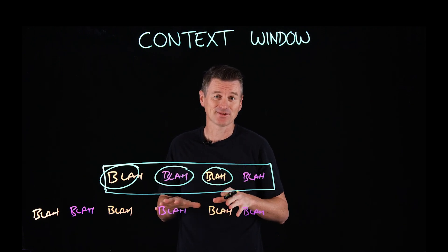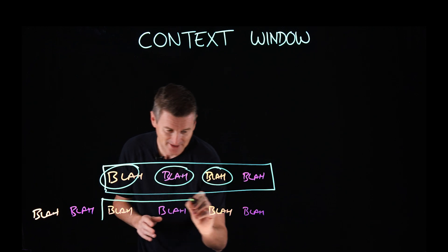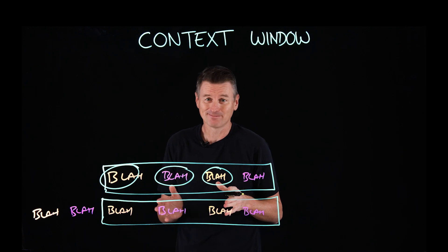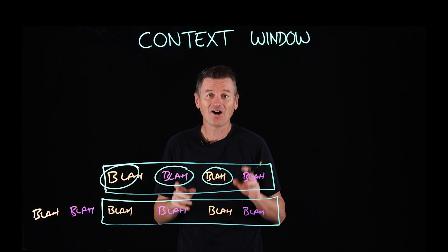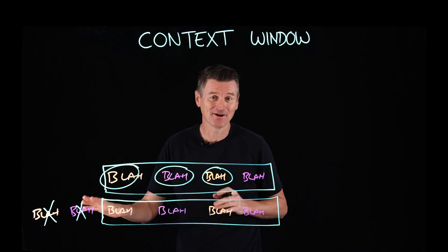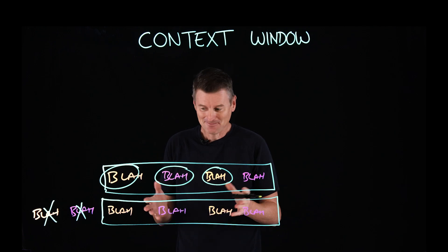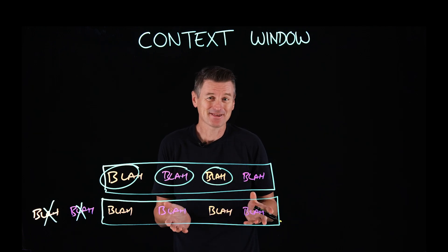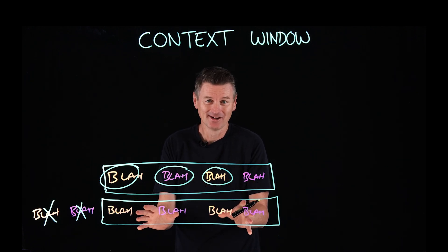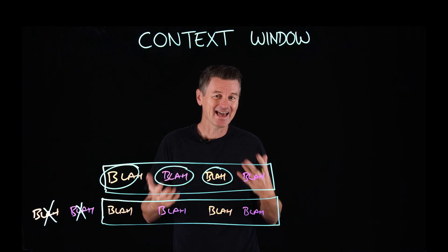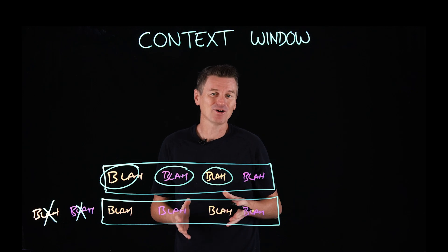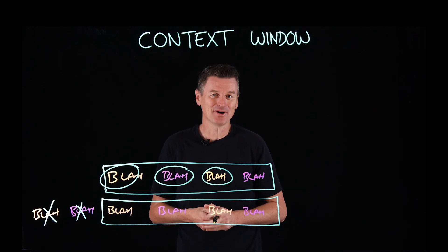It turns out that this conversation thread is actually longer than the context window of the model. That means the BLARs from earlier in the conversation are no longer available to the model — it has no memory of them when generating new responses. The LLM can do its best to infer what came earlier, but it's making educated guesses, and that can result in some wicked hallucinations. So understanding how the context window works is essential to getting the most out of LLMs.